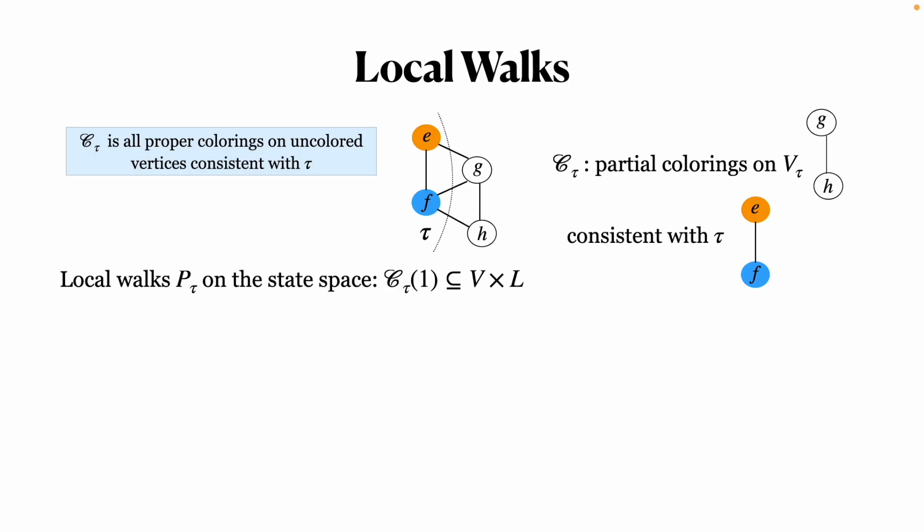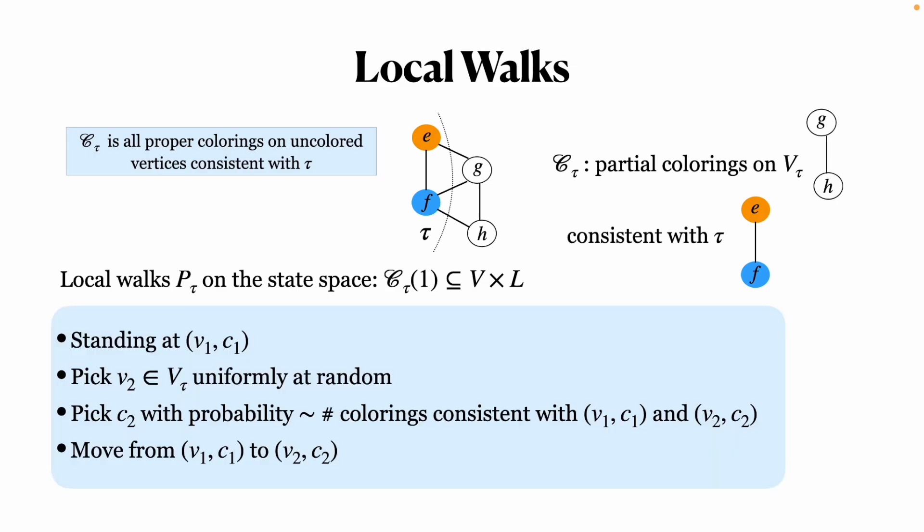The local walk Pτ moves through the space of available vertex color pairs after pinning τ, and we denote it by Cτ1. So starting from V1C1, the local walk moves to V2C2 with probability proportional to the number of partial colorings containing both V1C1 and V2C2.